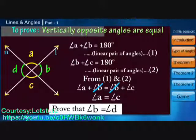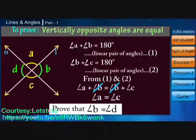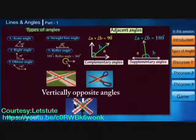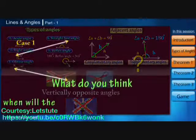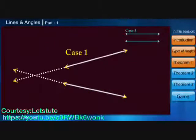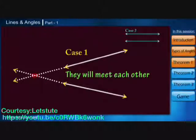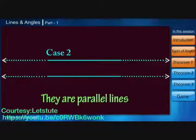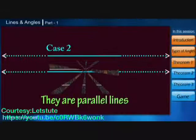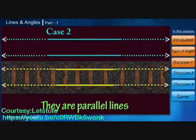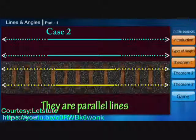We've learned there are various types of angles formed when lines intersect. But when will two lines never intersect? In case one, if we extend the lines they will eventually meet. But in case two, the lines will never intersect because they are parallel lines — just like a railway track, where two tracks always run parallel and never meet.